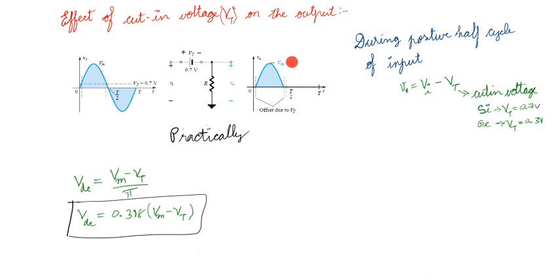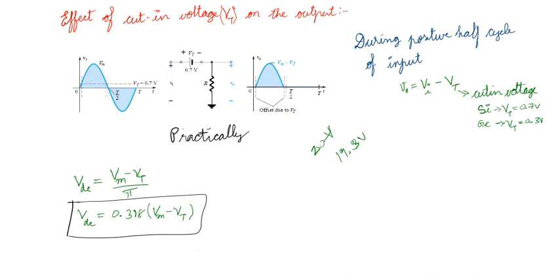During the positive half, it is not a perfect closed switch — there will be a voltage drop of 0.7V or Vt. If you write the output: V₀ = Vi − Vt. For silicon, Vt ≈ 0.7V; for germanium diode, Vt ≈ 0.3V. Generally, we ignore the cut-in voltage. If the input amplitude is 20V, cut-in voltage is only 0.7V, so 20 is very close to 19.3. So practically, Vdc = (Vm − Vt)/π = 0.318 × (Vm − Vt). Most cases we ignore Vt, but for germanium it is 0.3 and for silicon 0.7.